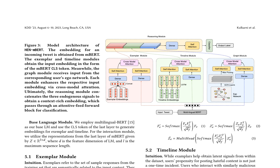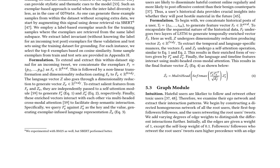The study hypothesizes that neutrally seeded datasets like GOT Hate should perform better than lexicon-driven counterparts. To improve detection, a modular mixture-of-experts setup called Hennembert is introduced, which enriches textual representations with ancillary signals. The architecture includes an exemplar module for stylistic and thematic cues, a timeline module for historical data insights, and a graph module for ego-network interactions. These modules enhance input embeddings via cross-modal attention, ultimately improving the detection of hateful content.